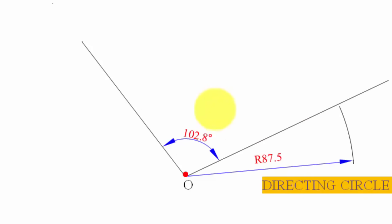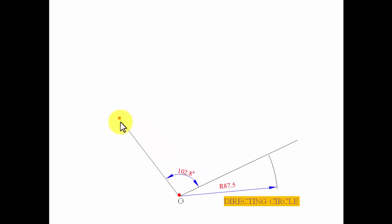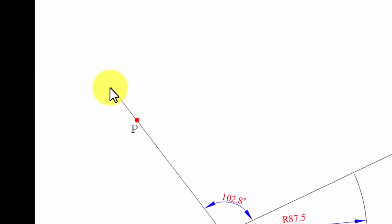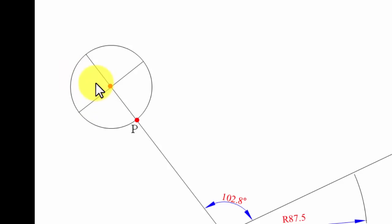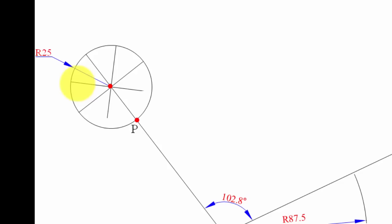So we have this sector of 102.8 degrees with radius 87.5 mm. Point B is the initial contact point above which we draw the rolling circle. Producing the line outward, the distance of 25 mm gives the center of the rolling circle. We draw the rolling circle, then divide it into four equal parts using perpendicular lines, and further bisect each sector to get eight equal parts.